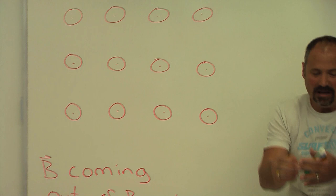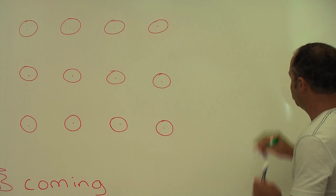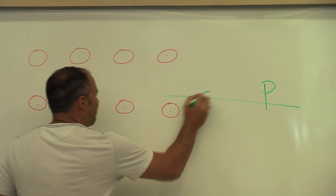Now, if it was going into the board, I would have drawn an X like this. So we have a magnetic field pointing this way. And now, let's take a positively charged particle, like a proton, for example, and send it into this magnetic field.